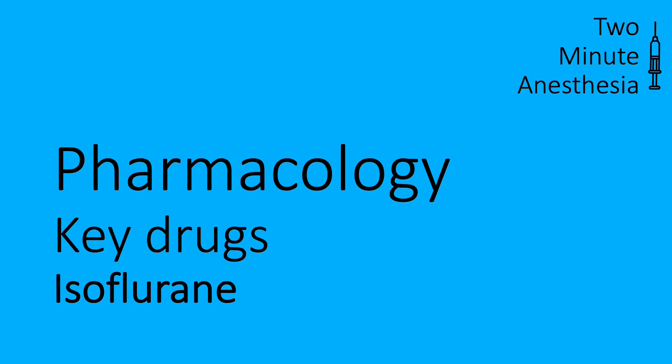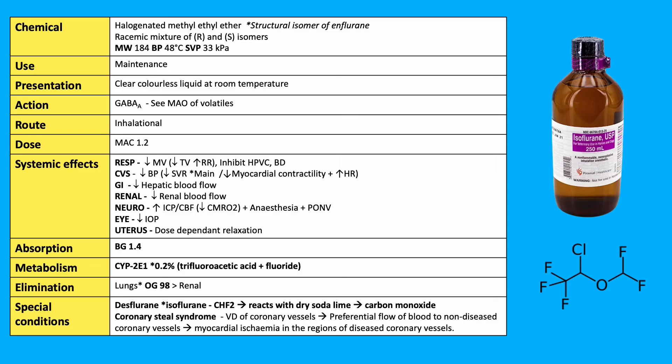2-Minute Anesthesia Pharmacology: Key Drugs. Isoflurane is a halogenated methyl ethyl ether, which is a structural isomer of enflurane. It is a racemic mixture of R and S isomers, with a molecular weight of 184, a boiling point of 48 degrees Celsius, and a saturated vapour pressure of 33 kilopascals.